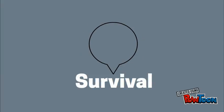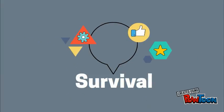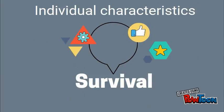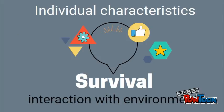Survival of any species depends on two sets of factors: one, individual qualities that allow it to survive; and two, how the species interacts with the environment in which it exists.